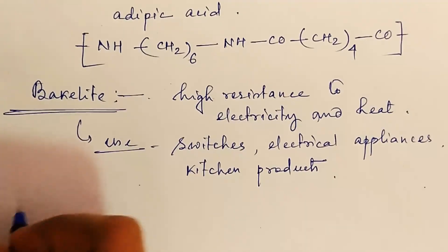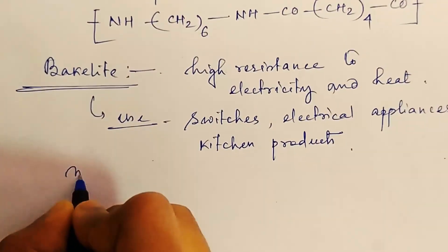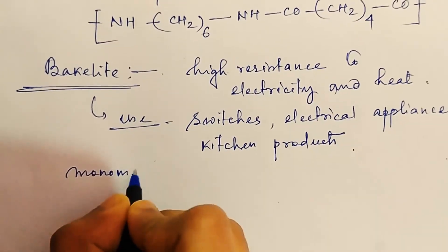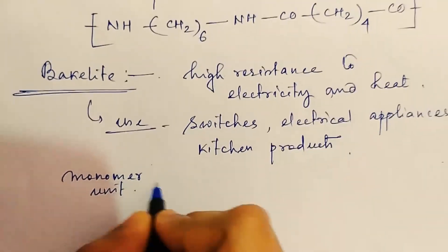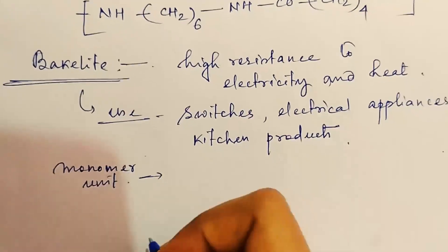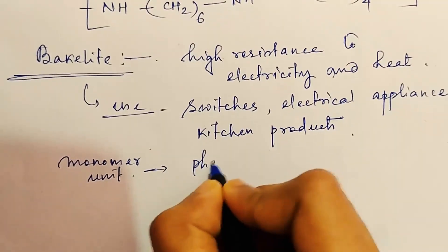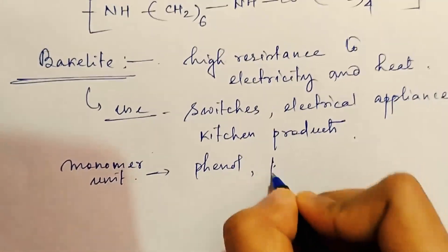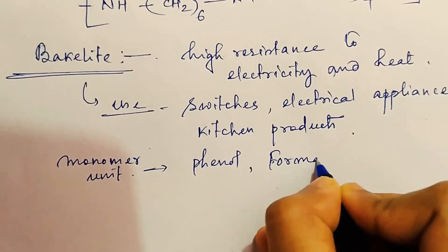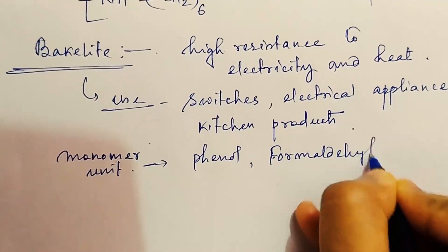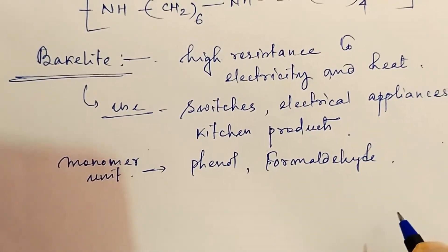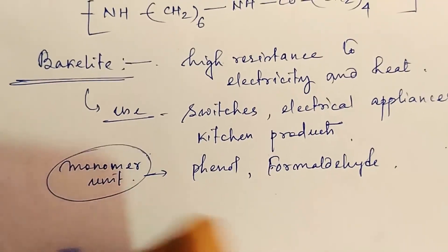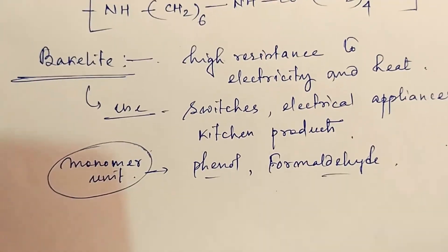Now the monomer unit of bakelite is two monomer units. One is phenol and another one is formaldehyde. You have to remember the monomer units.